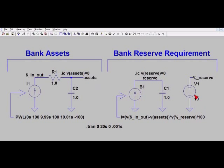Now notice that this voltage source sets my percent reserve requirement. So in this particular example I set the percentage at 10 percent. So whatever assets are on capacitor C2, 10 percent of those assets are required to be stored as reserves on capacitor C1.